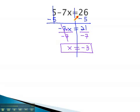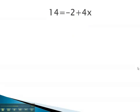Let's try another example. In this problem, the variable's on the other side. But we will still follow the same pattern, trying to get the x alone. First, by adding and subtracting.